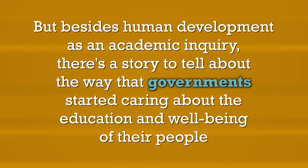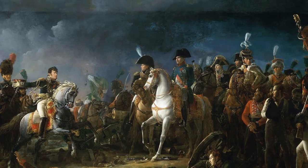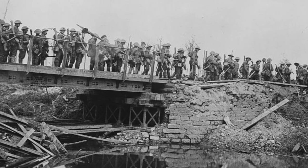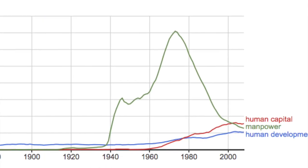Besides human development as an academic inquiry, there's a story to tell about the way governments started caring about the education and well-being of their people — and in many ways this story begins on the battlefield. The Prussians were stung by defeat at the hands of Napoleon, and in the wake of that defeat they created the first great state educational system, which became the talk of Europe and America. Jumping ahead to World War I, Great Britain sought more bodies for trench warfare but became appalled at the physical deficiencies among those they were trying to conscript. Governments started caring about education and welfare because it would improve their fighting force — their human resources for war, their manpower, as the term of art became during much of the 20th century.